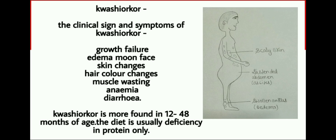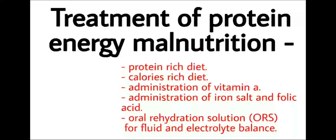The diet in kwashiorkor is usually deficient in protein only. Treatment of protein energy malnutrition includes a protein-rich diet, a calorie-rich diet, administration of vitamin A, administration of iron salts and folic acid, and oral rehydration solution for fluid and electrolyte balance.